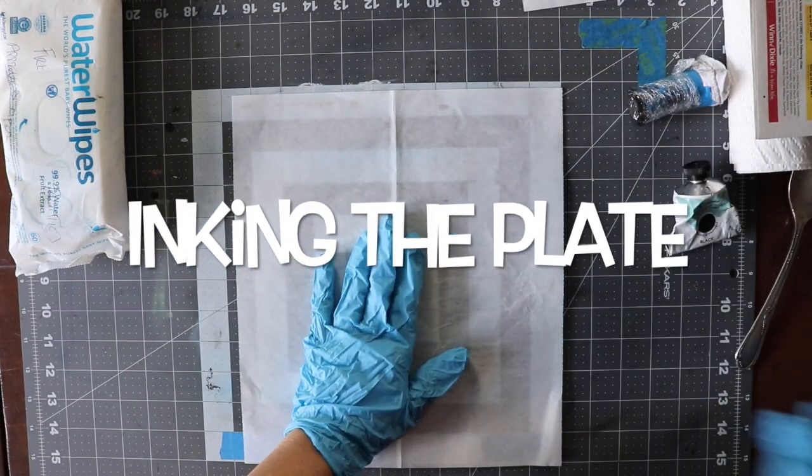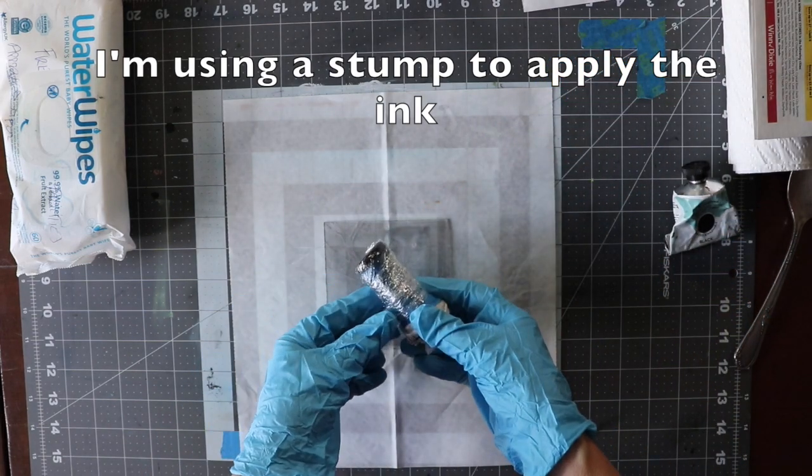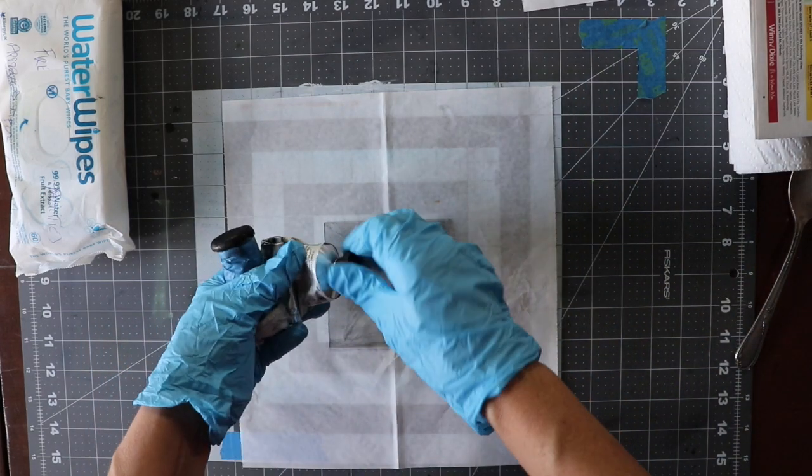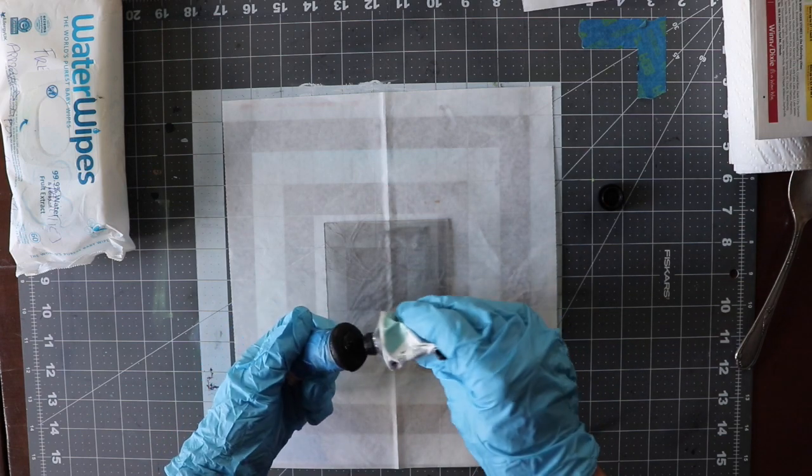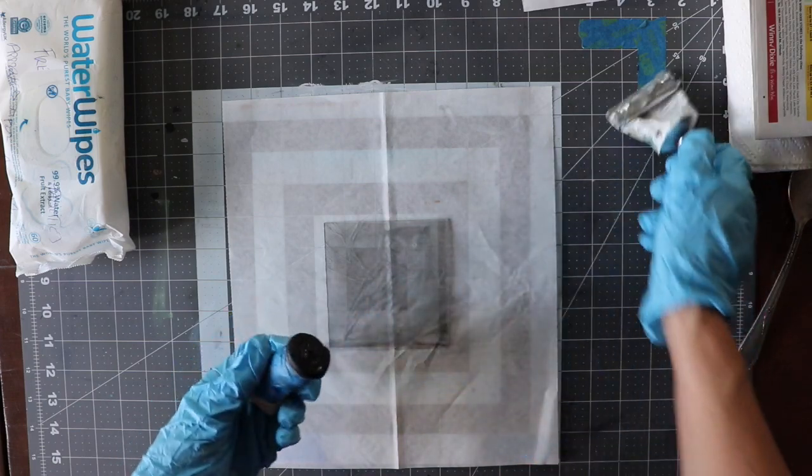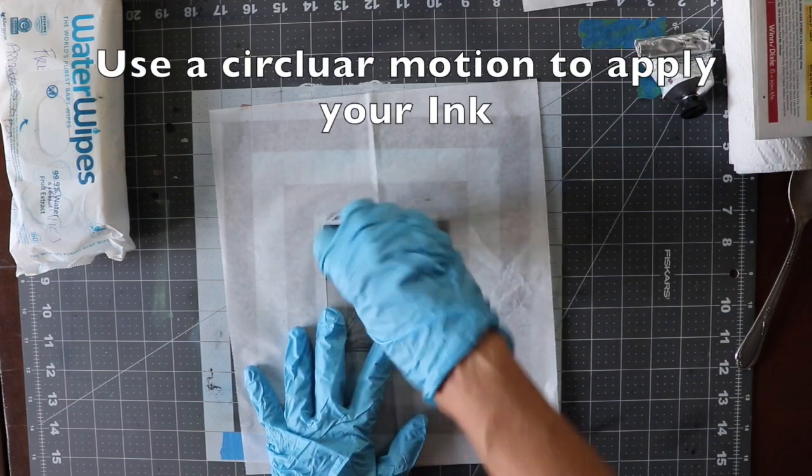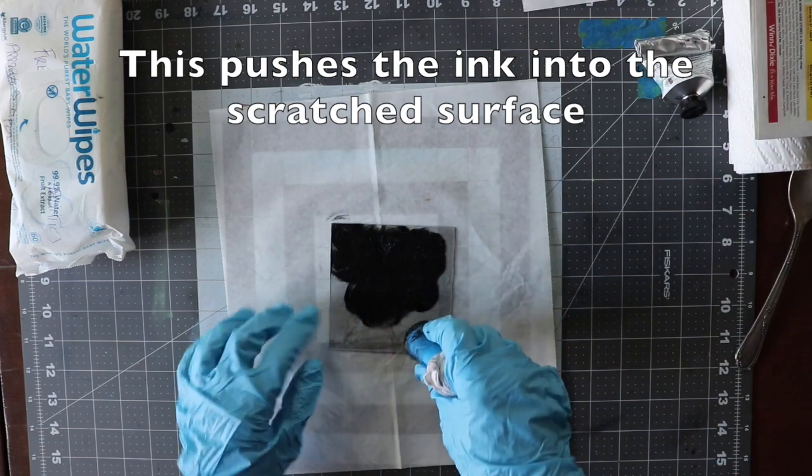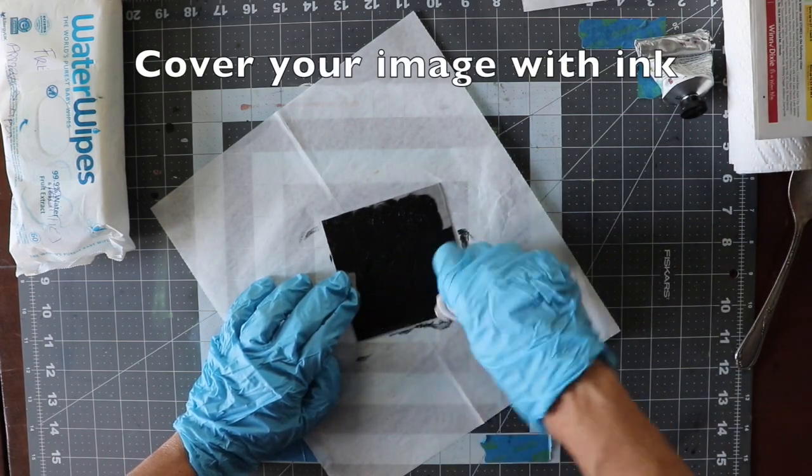Now I'm ready to ink the plate. I'm going to use this stump to apply the ink. You only need a dab of the Caligo ink on the end of your stump to get started. I apply the ink in a circular motion. This pushes the ink into the scratches on your plate. Be sure to cover your etched image completely with ink.